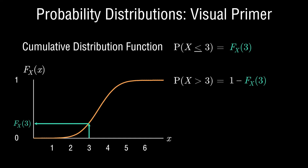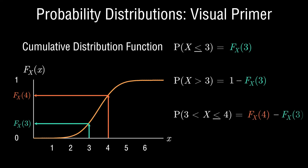Furthermore, you can use the cumulative distribution function to find the probability of lying between a range of values, which isn't so obvious with the probability density function — where you'd need to compute the area under the curve. With the CDF you can do this quite quickly. For example, to find the probability of lying between 3 and 4, compute the cumulative probability at outcome 4, then subtract the cumulative probability at outcome 3. The difference gives the probability of lying in that range.